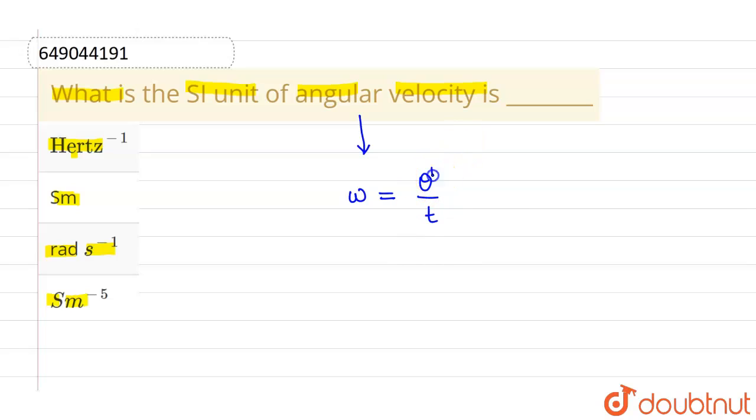Okay, now as we know that the SI unit of angular displacement is radian and the SI unit of time is second.